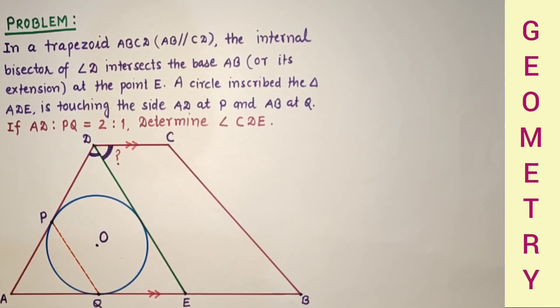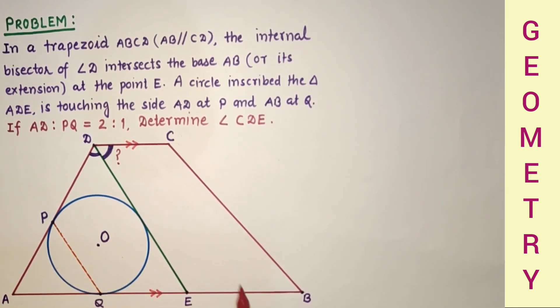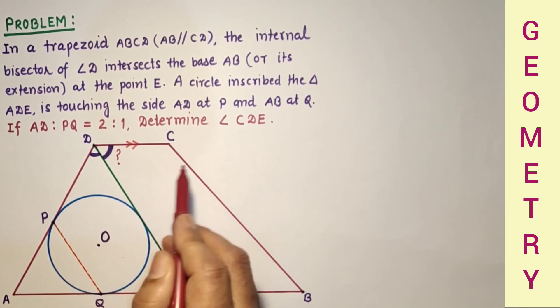Hi everyone, please look at the problem. In the diagram given, ABCDE is a trapezoid in which AB is parallel to CD.